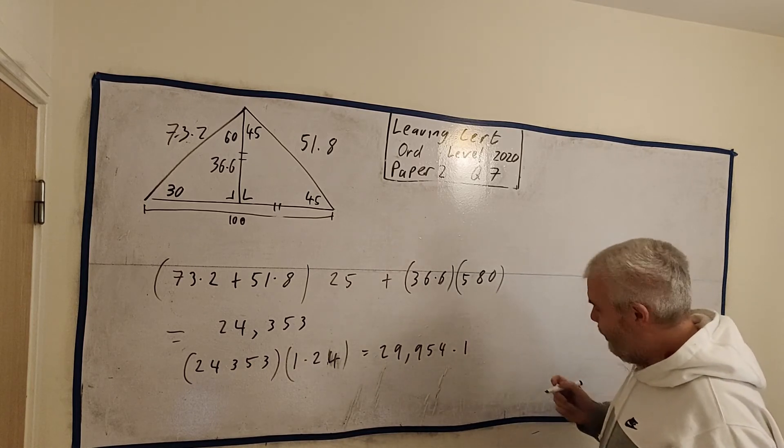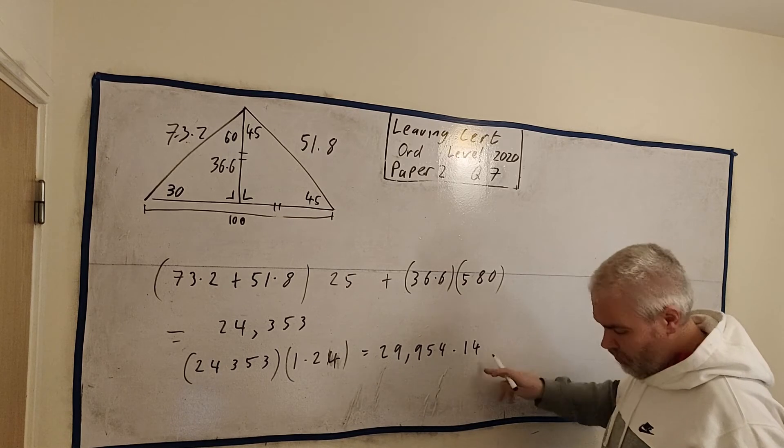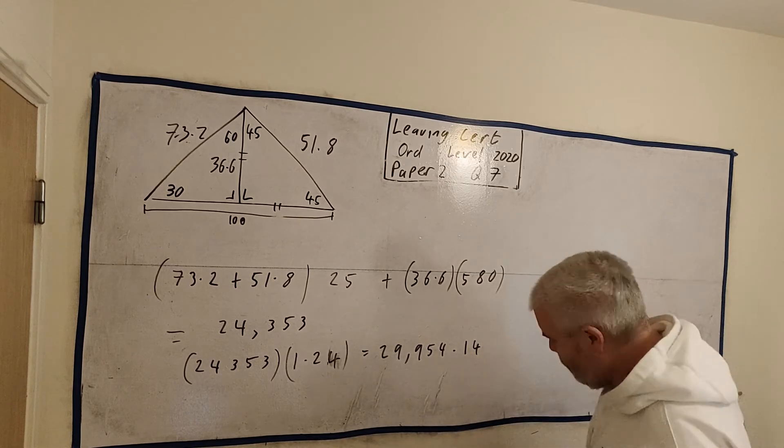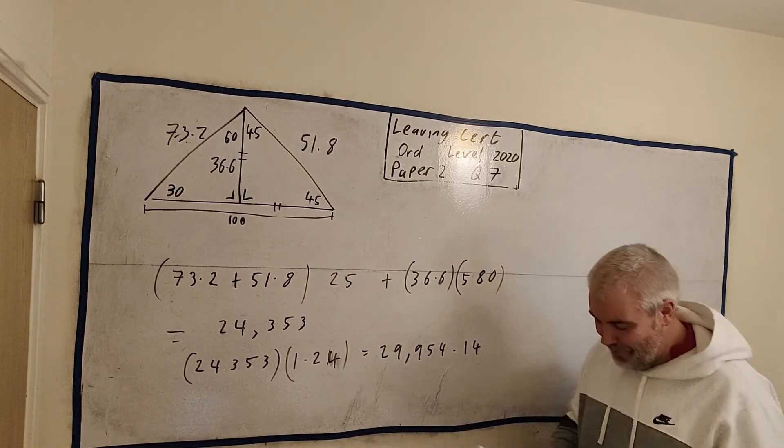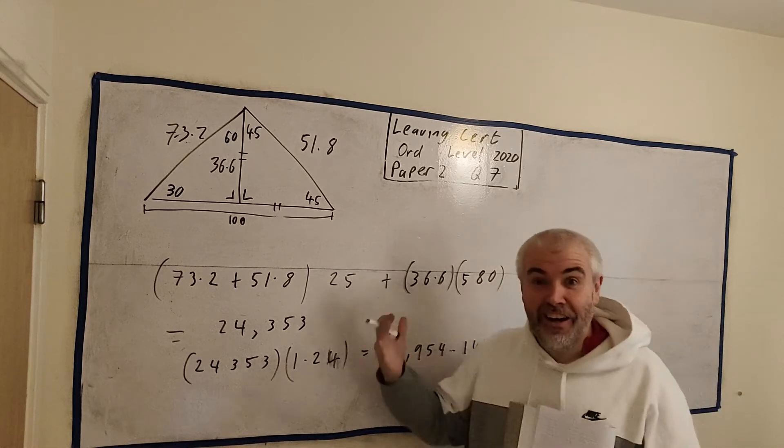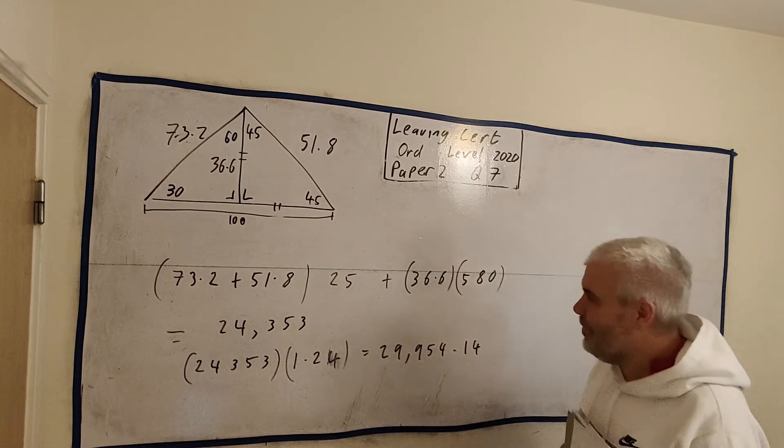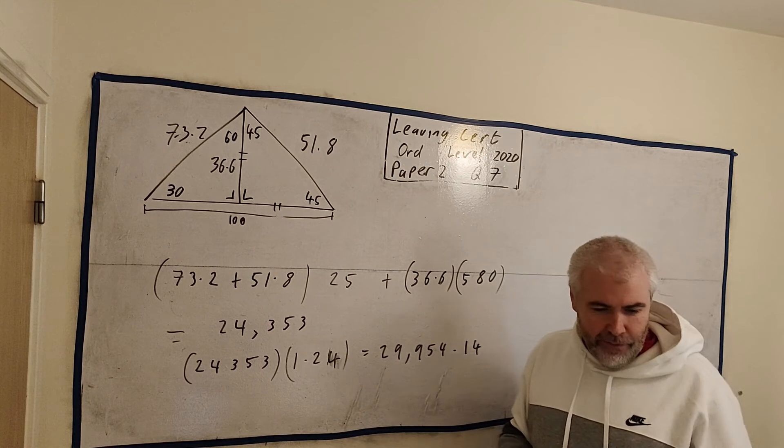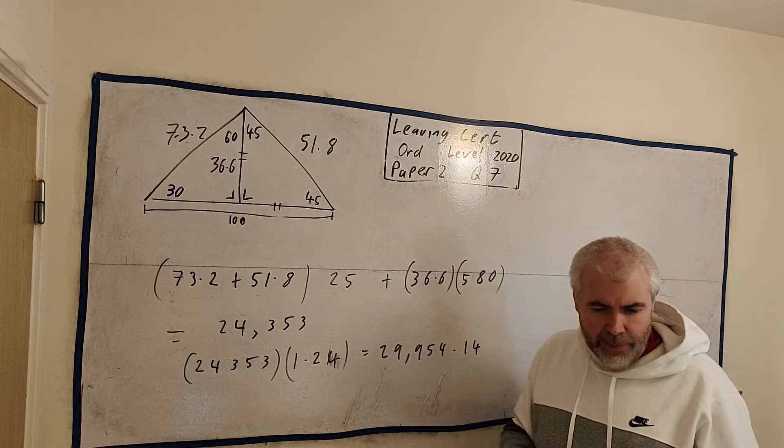To get tax, we need to get 23% of this and add it on. Or a much easier way to do it is, we get 24,353. Instead of adding on 24%, if we just multiply it by 1.24, that does the adding on for us. Put all that into a calculator, we get 29,954. My writing's a bit bad here. You guys double-check for me and let me know in the comments. Obviously, if you find any other mistakes, let me know as well. So that's the first part, A and B.